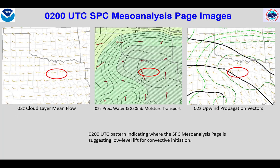Here are some heavy rainfall-related mesoanalysis fields. The flow aloft is fairly weak, suggesting slow storm motion from west to east. We have an axis of anomalously high precipitable water values right over the Dallas-Fort Worth area. Finally, the upwind propagation vectors are pointed west-northwest to east-southeast.